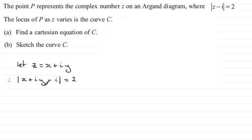So if I group up the real and imaginary parts, we've got the modulus of just x for the real part. And then if I group up the imaginary parts, we've got y minus 1, all multiplied by i. And that equals 2.